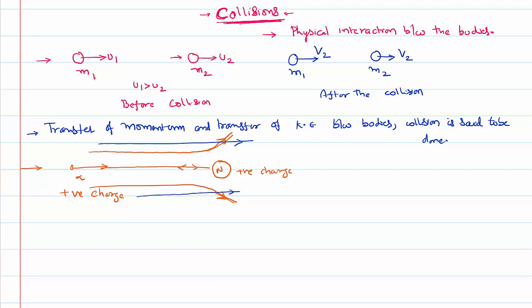Coming back to the collisions point — I would say the alpha particle has collided with the nucleus, but notice there is no physical interaction. The alpha particle has not struck the nucleus physically, but still there is a transfer of momentum. The path and velocity of the alpha particle were diverted, kinetic energy changed, and momentum changed. Therefore, the very important definition of a collision is: if there is a transfer of momentum and kinetic energy among bodies, then a collision is said to have happened — there may or may not be a physical interaction.